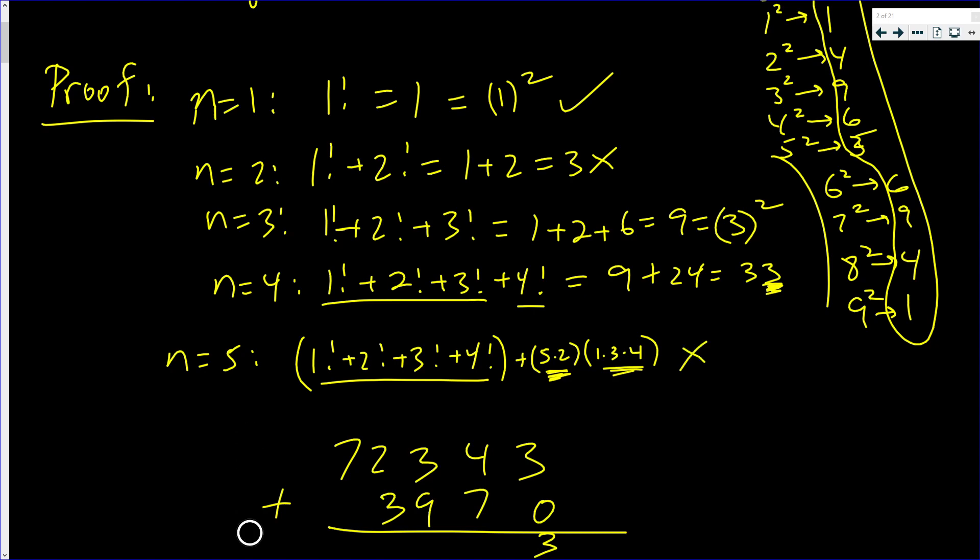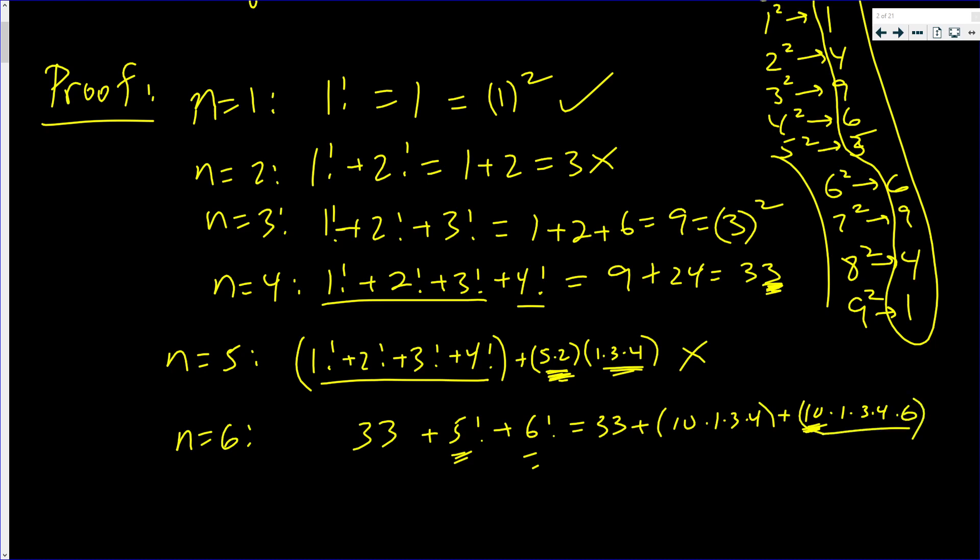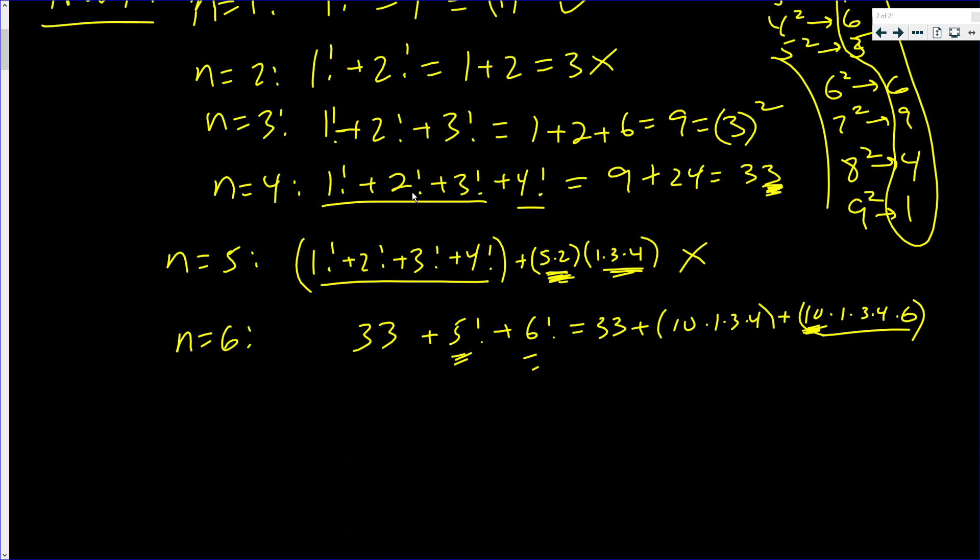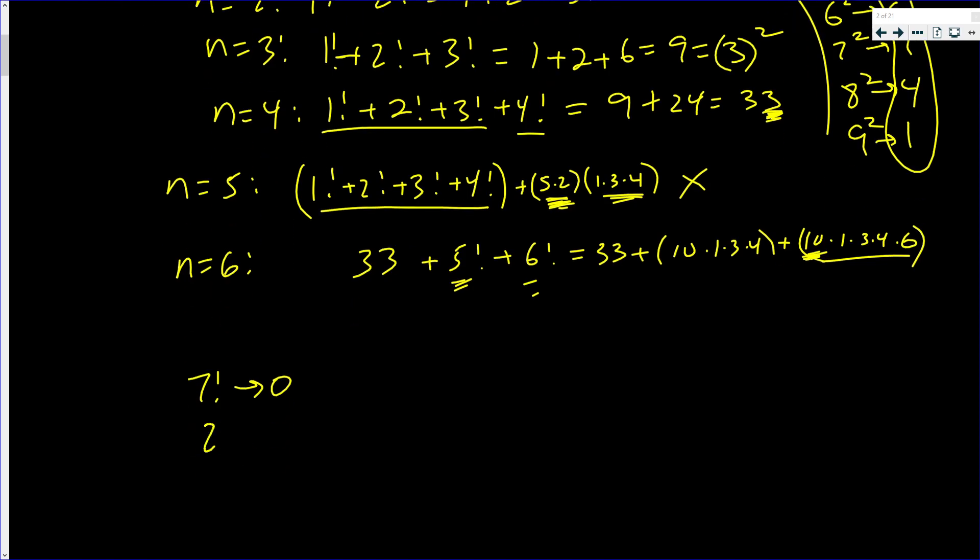And if you look at n is equal to six, again, you're going to have thirty-three plus five factorial plus six factorial. So you have thirty-three plus, again, ten times whatever, one, three, four. But now in six factorial, you also have five times two. You have one, I already put the two, times three, times four, I put the five here, and then you have a six. This is going to end in zero. In fact, seven factorial is going to end in a zero. It's going to end in a zero because it has five and two as two of the factors. That multiplies out to ten. Eight factorial is going to end in a zero. Nine factorial is going to end in a zero.